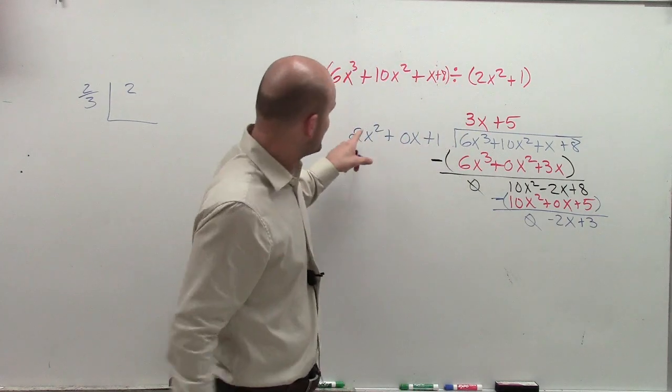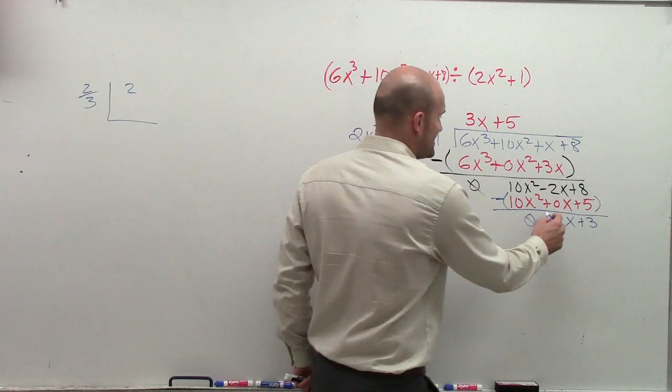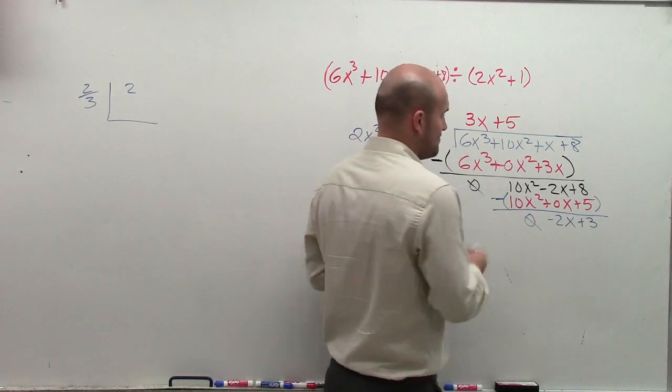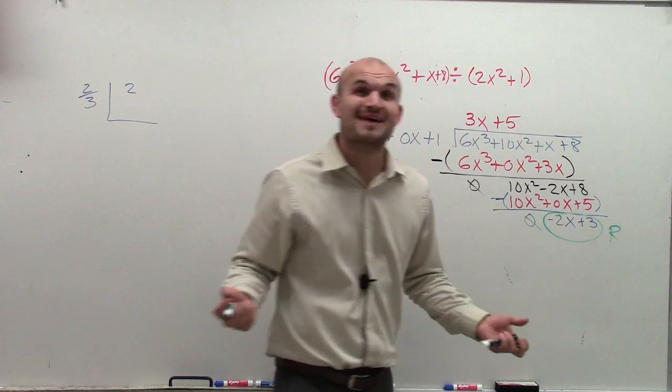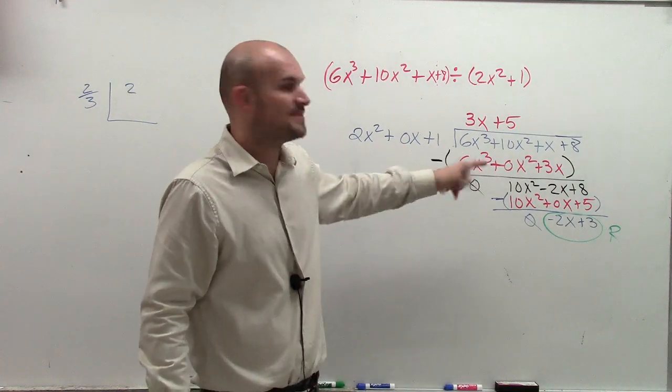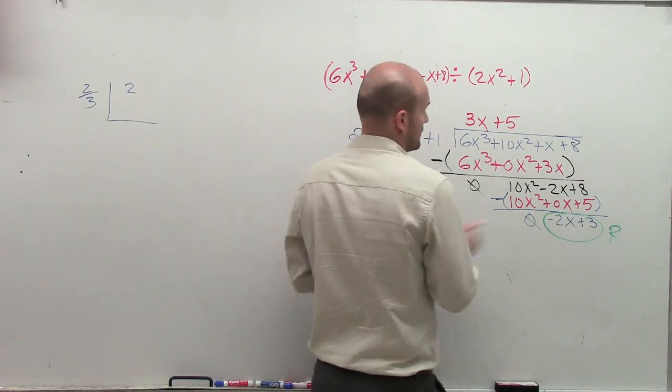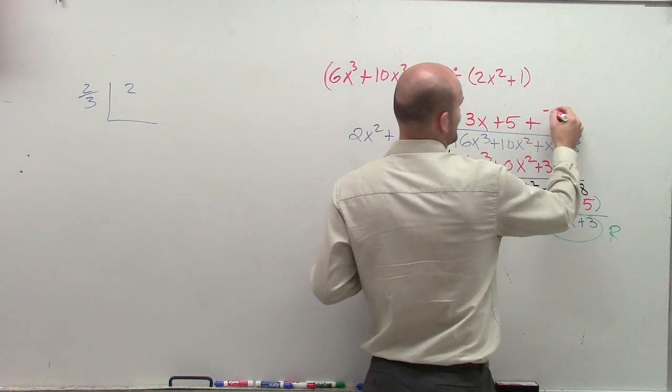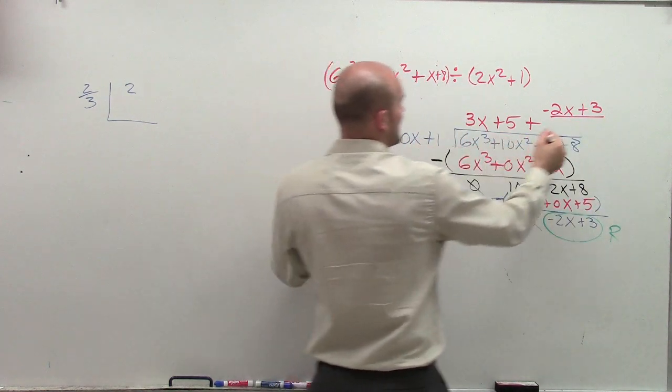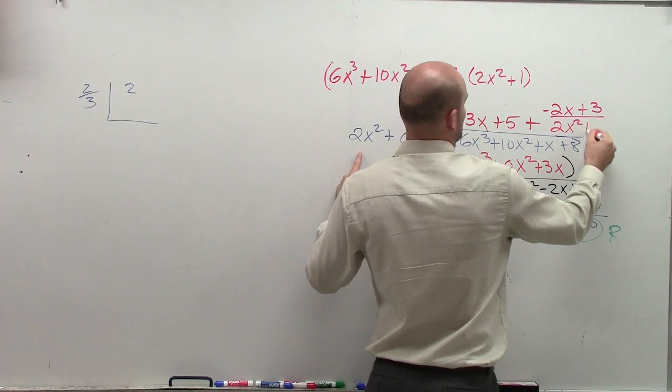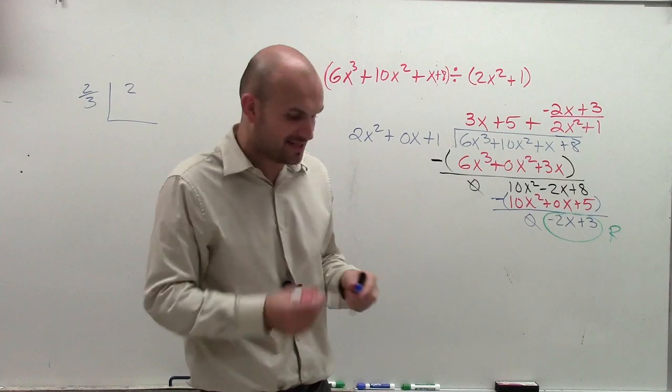Now I look at it and I say, does 2x squared divide into negative 2x? And the answer is no. So therefore, I now have my remainder, just like the good old remainder that you had back in the day. So to finish off my problem, to write it as my quotient, I'm going to take my quotient plus the remainder, which is a negative 2x plus 3, all over my divisor, which I'm going to write as 2x squared plus 1. Now I don't need to write this 0x, because that was just a placeholder for me to do my synthetic division.